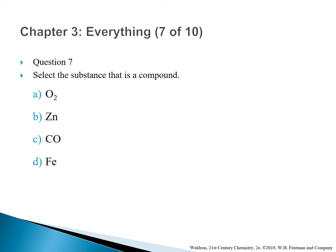Question 7: Select a substance that is a compound. A. Oxygen. B. Zinc. C. Carbon monoxide. D. Iron. The correct answer is C — carbon monoxide. A compound contains atoms from more than one element. Carbon monoxide contains carbon and oxygen, so it is a compound.